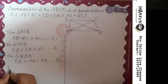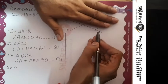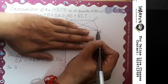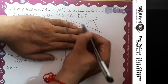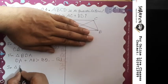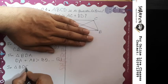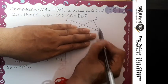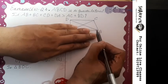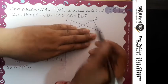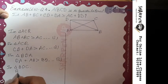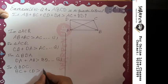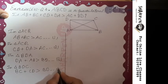Now take our fourth triangle: hiding the lower part gives triangle BDC. Adding sides BC plus CD, the sum is greater than third side BD. So BC plus CD is greater than BD. Let's name this expression four.